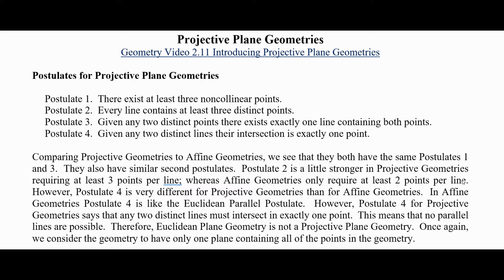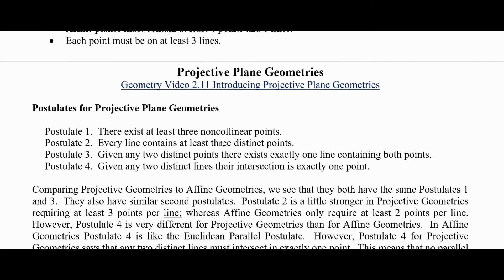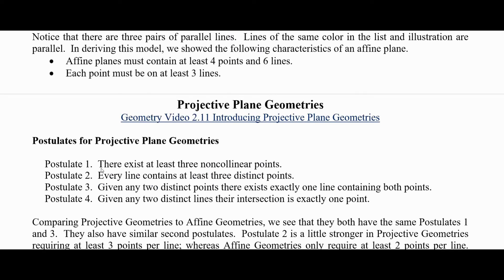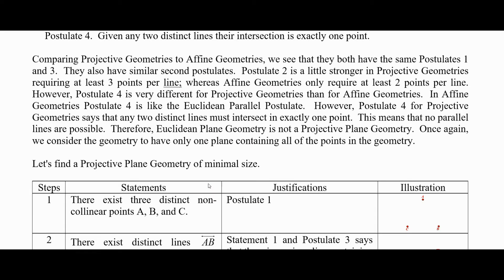We're going to consider a geometry with only one plane containing all of the points. Let's find a projected plane geometry of minimal size — what would be the smallest one we could make? Last video we looked at the smallest affine plane geometry; now let's find the smallest projected plane. We start with postulate one: there exist three distinct non-collinear points A, B, and C.